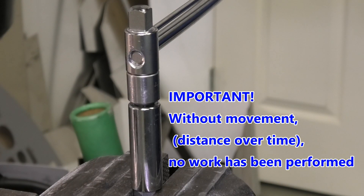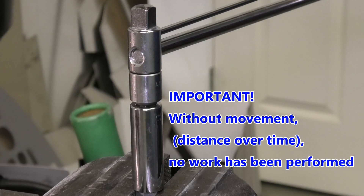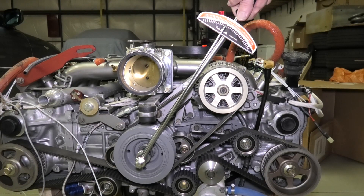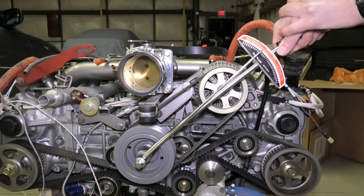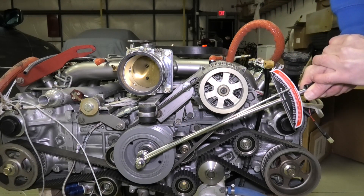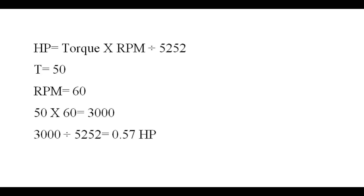You'll see there's no movement of the nut, so therefore no horsepower. In the next clip I've got the torque wrench on an engine and I'm actually turning the engine at about 50 pound-feet of torque. So let's say I turn this engine over at one revolution per second, which would be 60 RPM. Torque is 50, RPM is 60 — 50 times 60 is 3,000. 3,000 divided by 5252 is 0.57 horsepower.